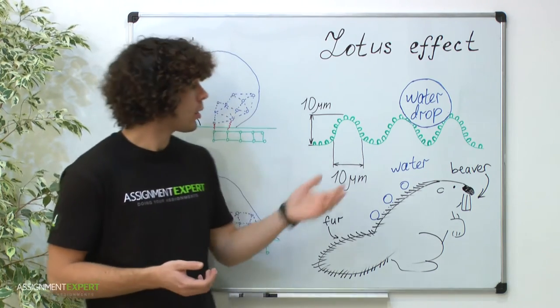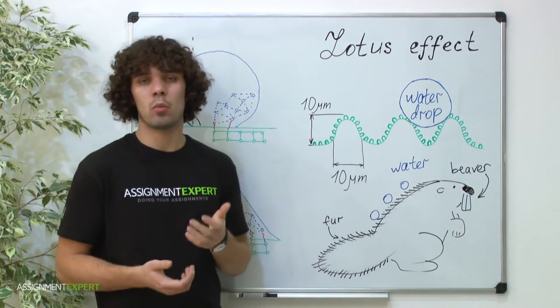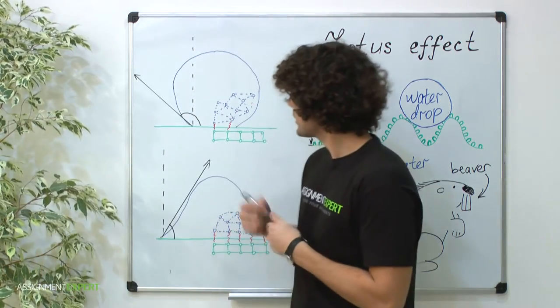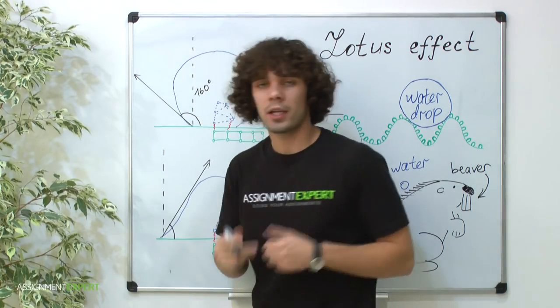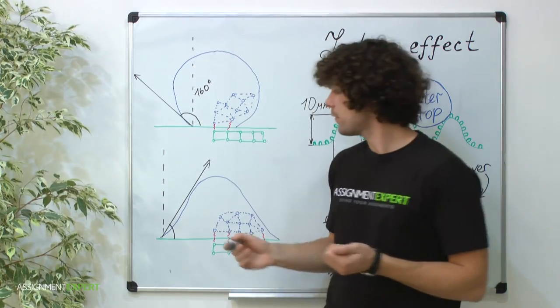However, the wax and lotus leaves itself cannot explain why the contact angle makes more than 160 degrees, while the contact angle of magnolia leaves is only 54 degrees.